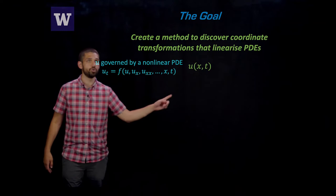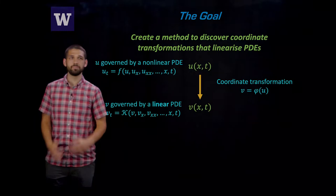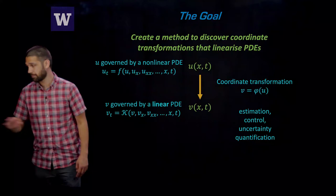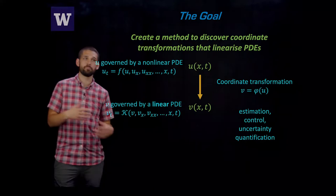The general framework here is we're going to take some function U that's governed by a nonlinear PDE, and we're going to feed it through some coordinate transformation to get a new function V, where V is governed by a linear PDE. Why do we want to do this? Because we already have many techniques that are already established for linear PDEs, for example, estimation, control, and uncertainty quantification.